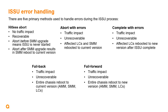The first method is hitless abort, used for recoverable errors. If the error occurred before the standby module was rebooted to the new version, ISSU is immediately aborted and the system continues operating on the current version. If the error occurs after the standby module reboots, it automatically reboots to the current version to recover system redundancy. All other methods are for unrecoverable errors and are expected to result in data plane traffic impacts. Abort with errors reboots affected line cards and the standby module to the current version. Complete with errors reboots affected line cards to the new version after ISSU completes. Fail back performs a full chassis reboot to the current software version, and fail forward performs a full chassis reboot to the new version.